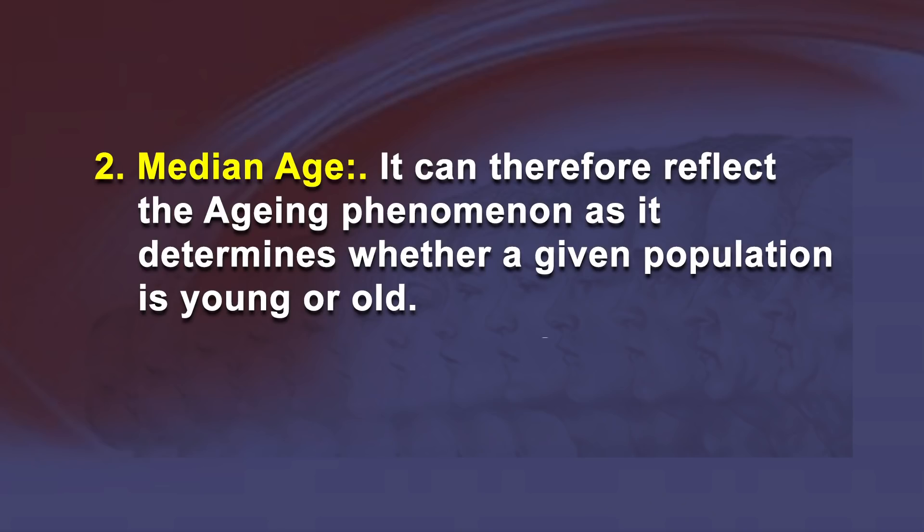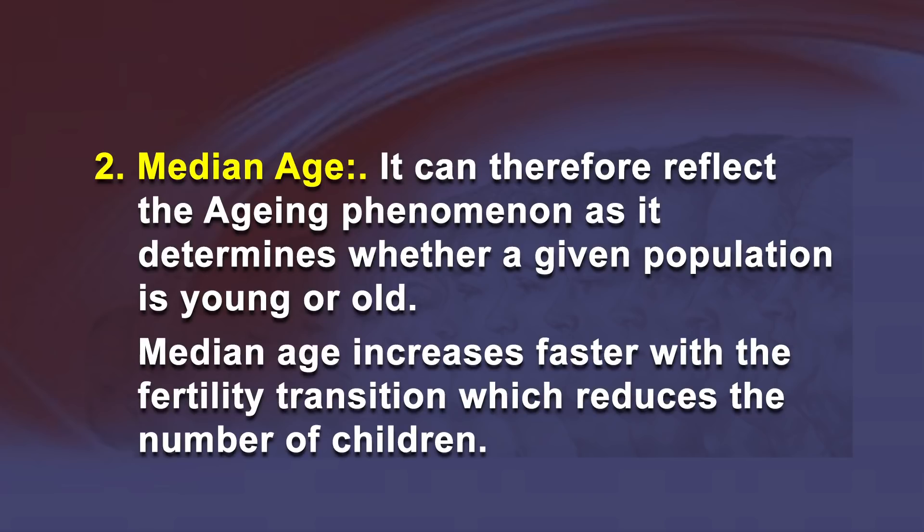Median age: The median age is defined as the age which divides the population into two equal halves. It reflects the aging phenomenon by determining whether a given population is young or old. Median age increases faster with the fertility transition, which reduces the number of children. For India, it is computed as 20 years for 1981 and is expected to reach 28 years by 2021.